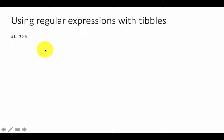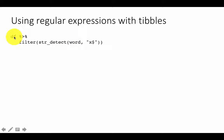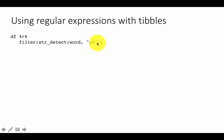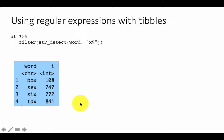Having this table, we can now start doing some processing. Using `df %>% filter(str_detect(word, 'x$'))` — remember, `word` is now a column within this data frame. The dollar sign means end of the string, so `x$` means x comes at the end. We're filtering to keep only those words that end in an X. That's the result, and you can see the index of where these words appear within the table.